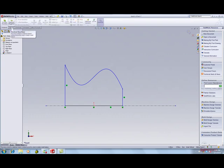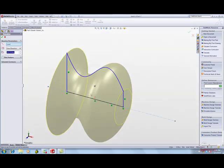Click Revolve Boss Base. Select 360 degrees. If required, select the horizontal center line as the axis of revolution. Click OK.